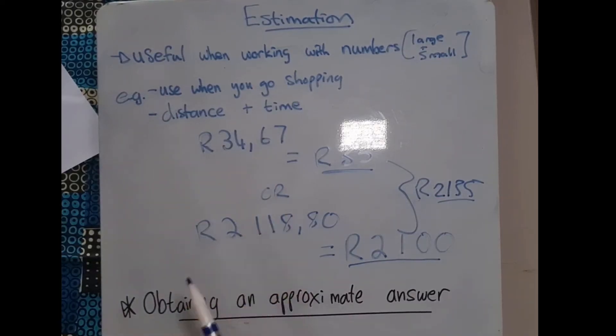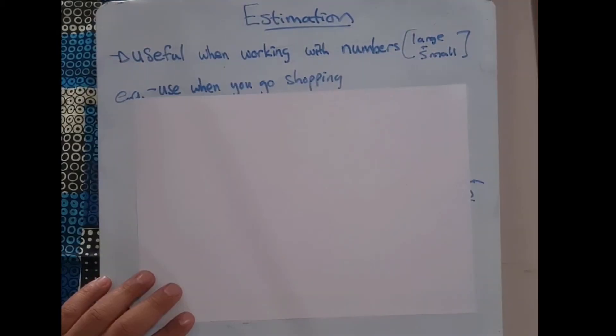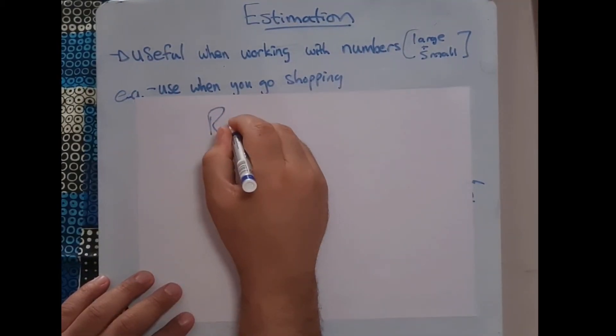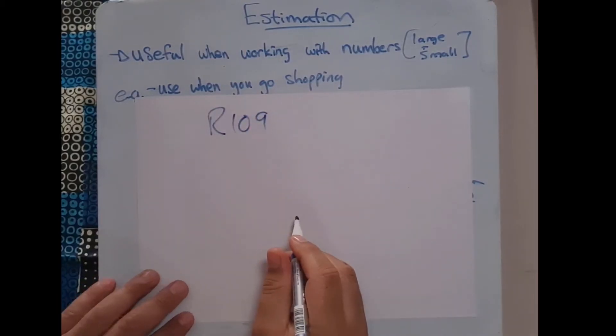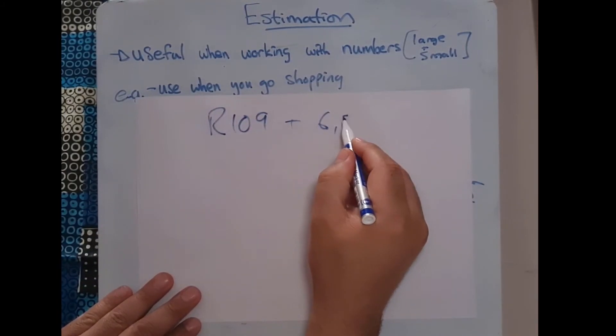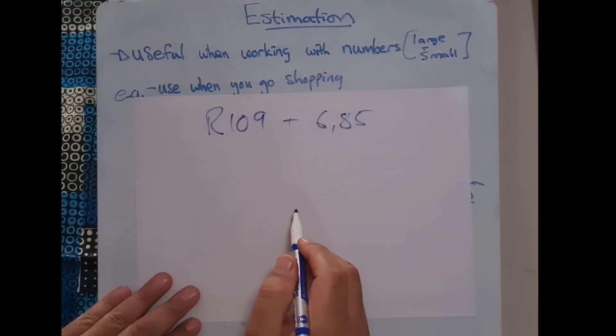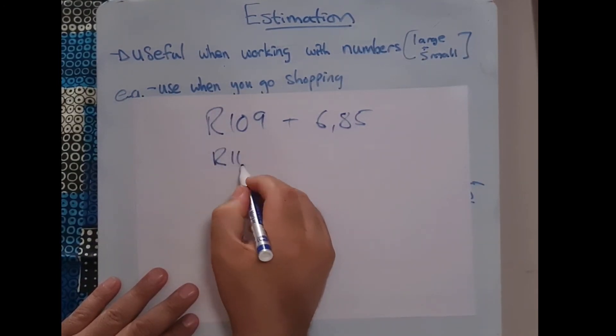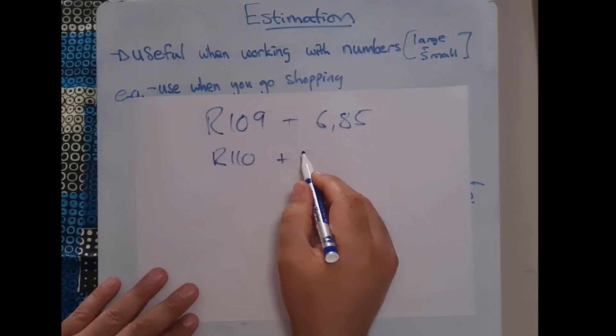We can also use the following as an example. If I was to take R109 and add that to R6.85, how would I change that into some sort of estimation? Well, I'd probably change that to R110, and this to around, you could see I'm going to round it up to around R7.